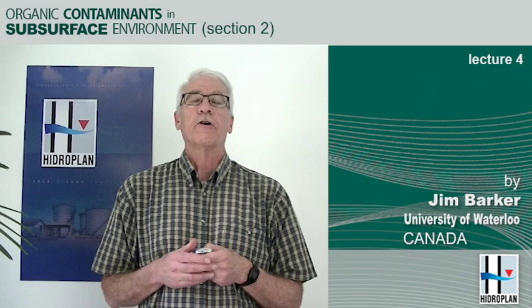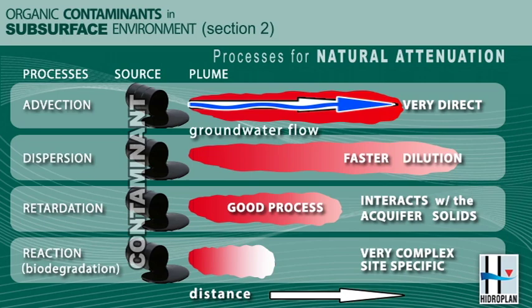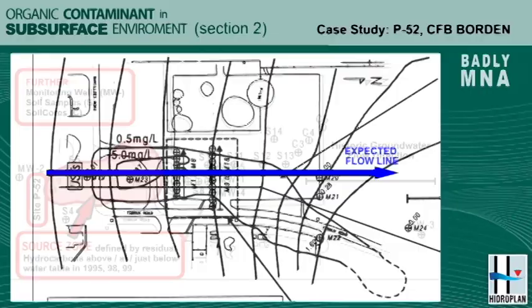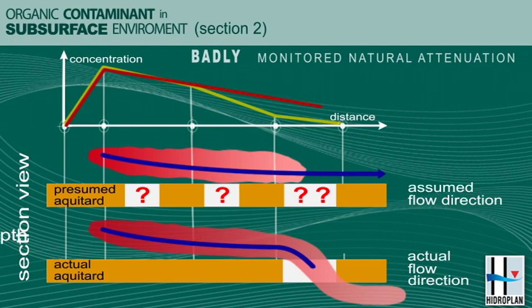Welcome to the fourth lecture of the second section of the course on organic contaminants in the subsurface environment. In the previous lectures we outlined the idea of monitored natural attenuation and the four processes we had to consider in that remedial technology: advection, dispersion, retardation, and reaction. We've had some examples of advection and how poor monitoring might lead to bad interpretations, and in this lecture we want to move on to the second process, dispersion.